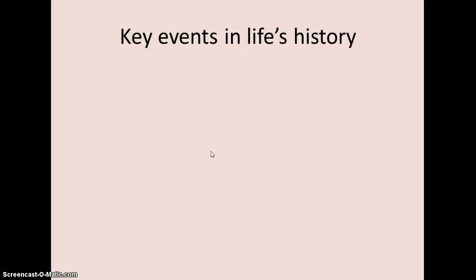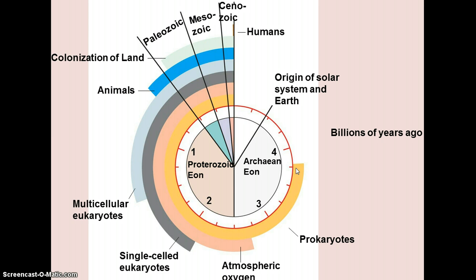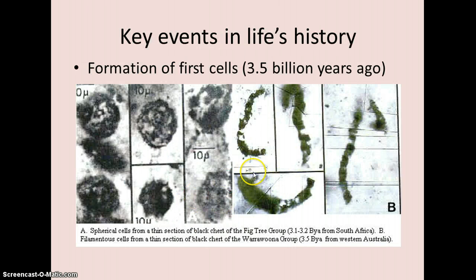What are some of the key events in life's history if we think of it as a clock? Of course, we get the origin of the solar system and planet Earth, which is more or less four and a half to five billion years old. And we see the first living things at about three and three-quarter billion years ago — the first evidence of prokaryotes, with fossils of these squiggly things in rocks that are thought to be the fossils of the first prokaryotes.